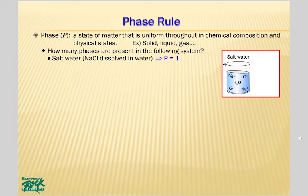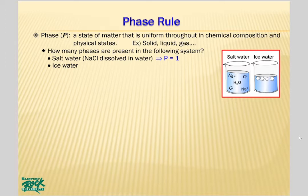How many phases are present in ice water? Both ice and liquid water are uniform in chemical composition. However, their physical states are different. Ice is solid, while water is liquid. Consequently, there are two phases present in ice water.